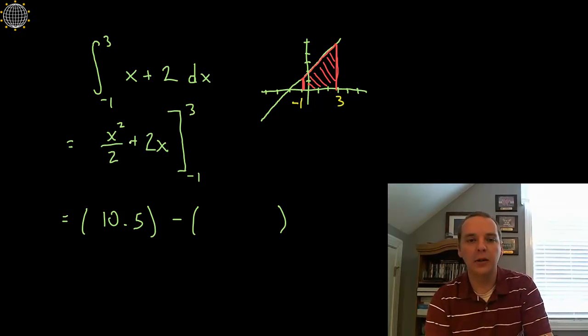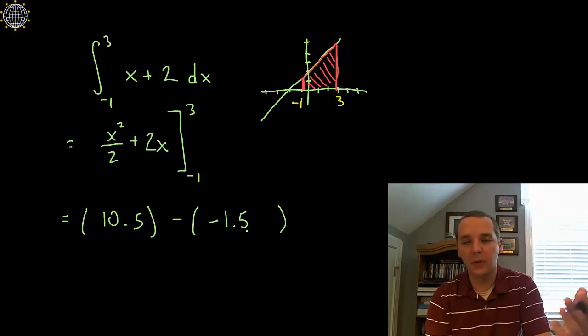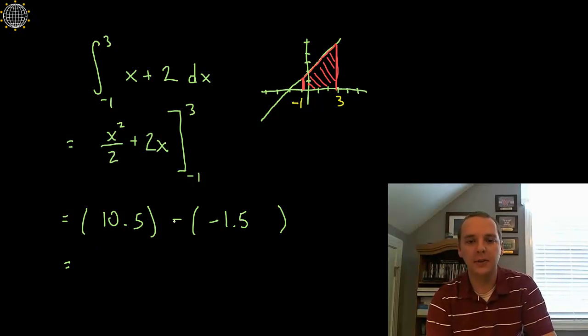And then if we plug in negative 1, negative 1 squared is positive 1 divided by 2 makes a half. So we have a half minus 2 because that's 2 times negative 1. So a half minus 2 is negative 3 halves, negative 3 halves. In other words, negative 1.5 if you wrote it as a decimal. But again, you don't have to, you could have written negative 3 halves there.